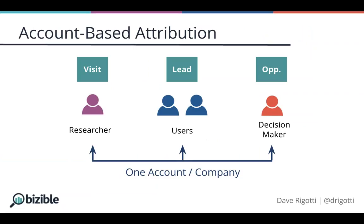Just like how your attribution model can introduce channel bias, it can also introduce persona bias. Even if you aren't doing account-based marketing yet, it's important to view all the people involved in a deal in one model. Some personas, like the researcher, will have more top-of-funnel touches versus the decision maker, but we all know the decision maker persona is incredibly important to deals and you need to be accounting for it. If you're doing single-touch attribution and measuring individuals instead of deals, you're only going to be applying revenue credit to the researcher. When you include multi-touch attribution and account-based views in your marketing revenue performance, you can really start to deliver value to your organization in a big way.